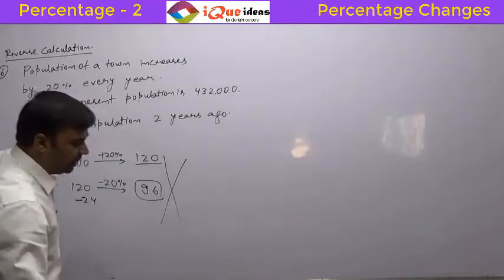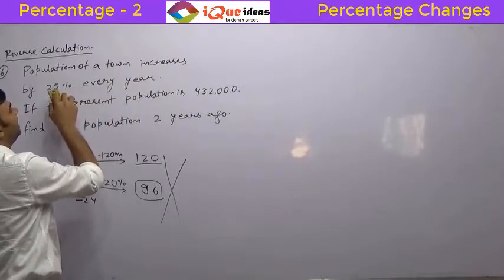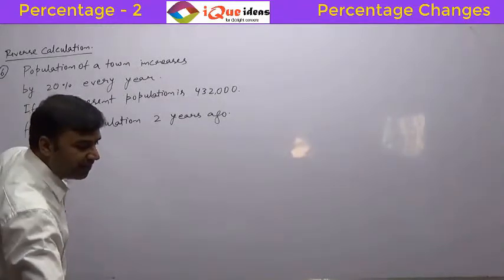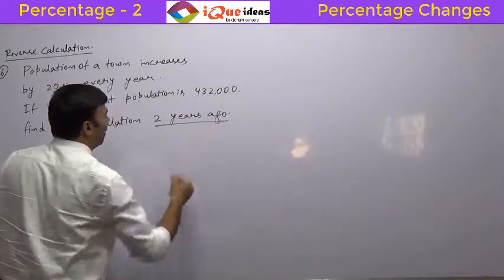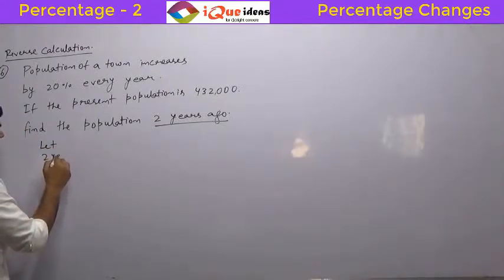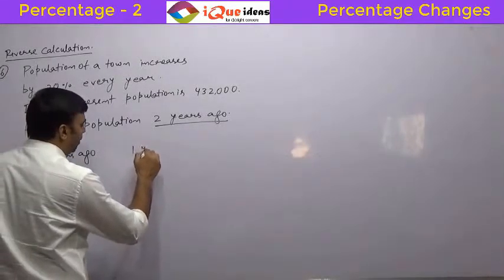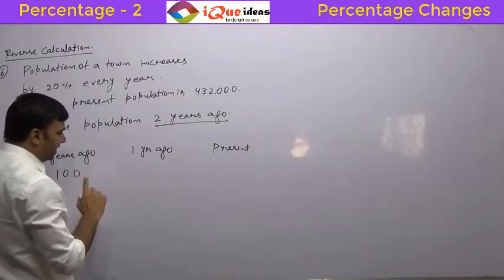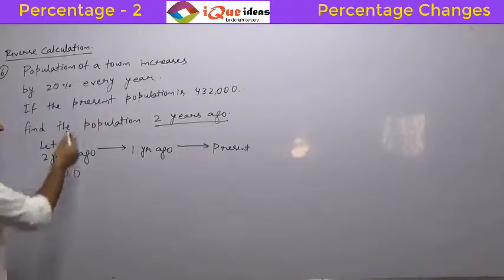So how do we do it? Percentage calculation can be done only in the forward direction. The population increases by 20 percent every year, so we can assume the population at a certain year and then move forward. We cannot go backward. Since the present population is given and we want the population 2 years ago, let us assume that 2 years ago the population was 100. From 2 years ago to 1 year ago and from 1 year ago to present — both are forward situations, so the calculation can be done.